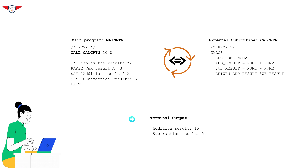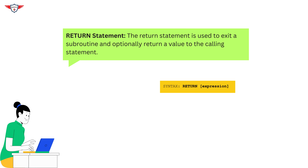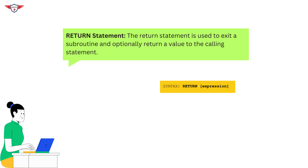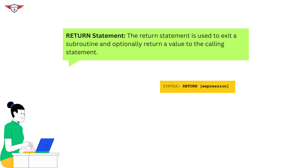Now let's talk about the return statement, which I have already used in our subroutines. The return statement is used to exit a subroutine and optionally return a value to the calling statement. It helps in controlling the flow of your program and passing results back to the main program. The syntax is straightforward: you use the return keyword followed by an expression.